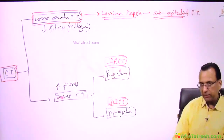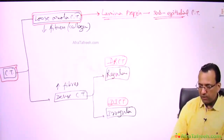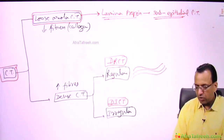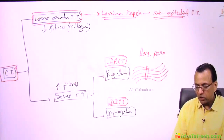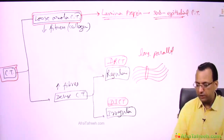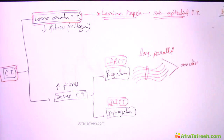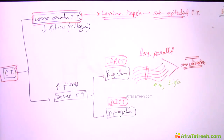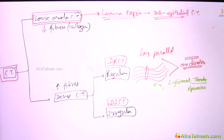When will you say it is dense regular? Regular means there are long, parallelly running fibers of collagen in one direction. Why are they running in one direction? Maybe because they want to pull the bone. Examples could be a ligament, a tendon, or aponeurosis which is a flat tendon. These structures have collagen fibers running parallel with each other in one direction.